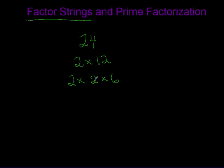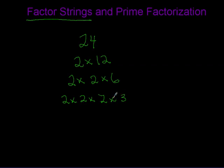So this factor string has three factors in it. We could keep the first two twos, and then another name for six is two times three — so we could have two times two times two times three. That's the longest factor string you could get for 24. There are other ones too: three times eight, four times six. Some numbers have more factor strings than others.